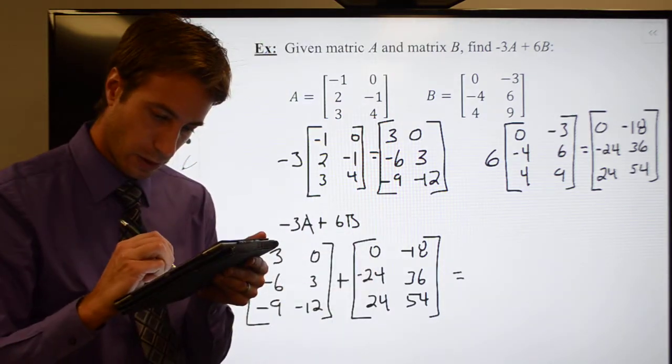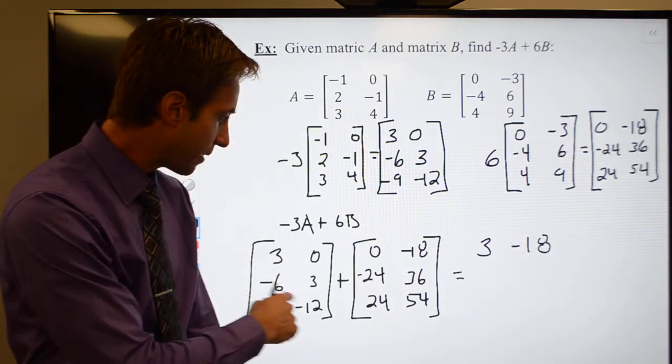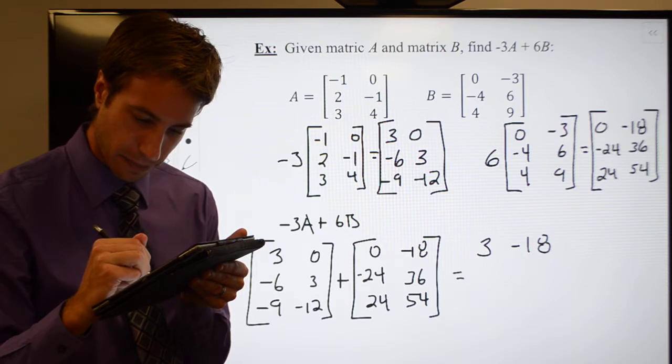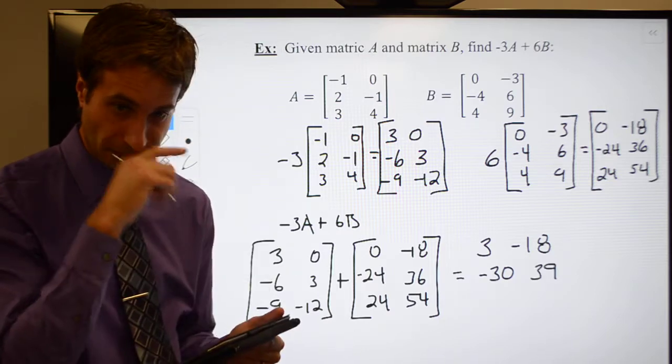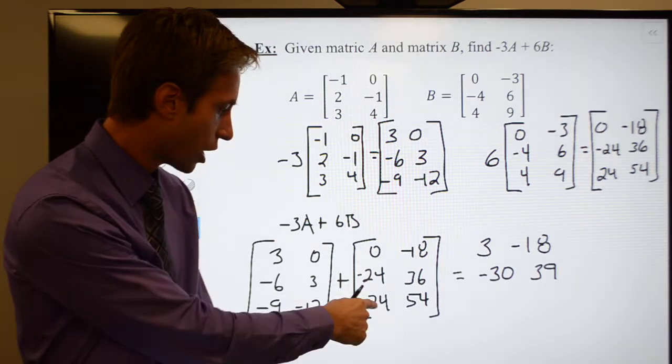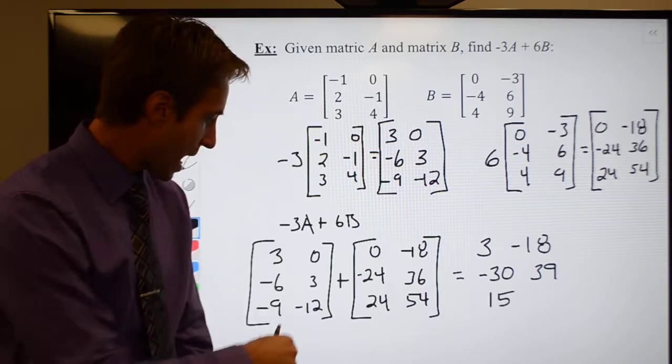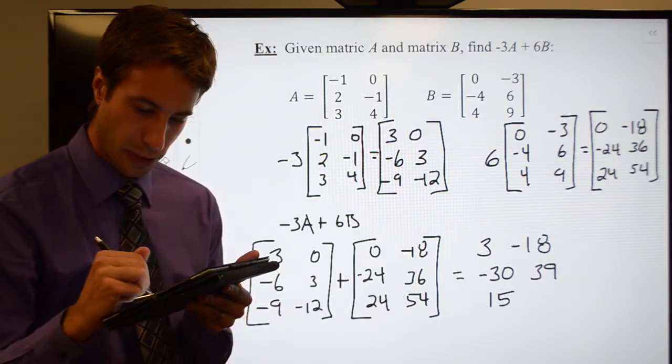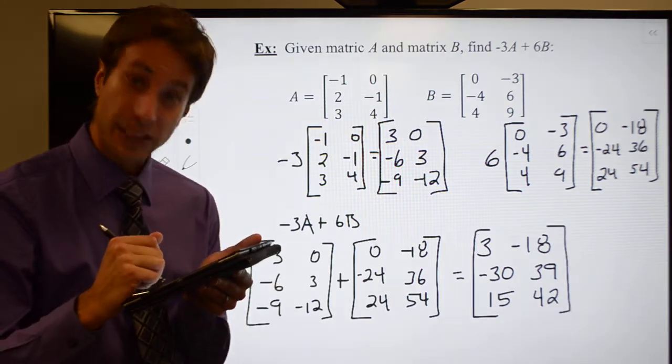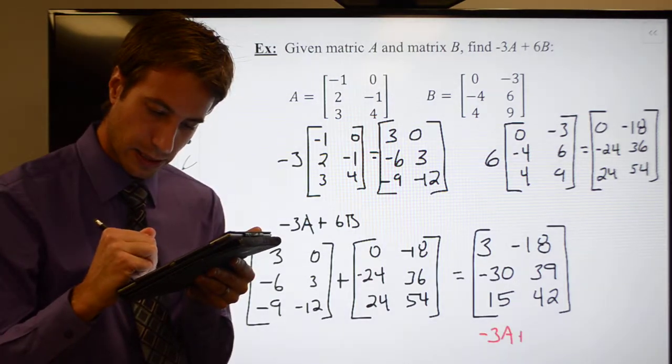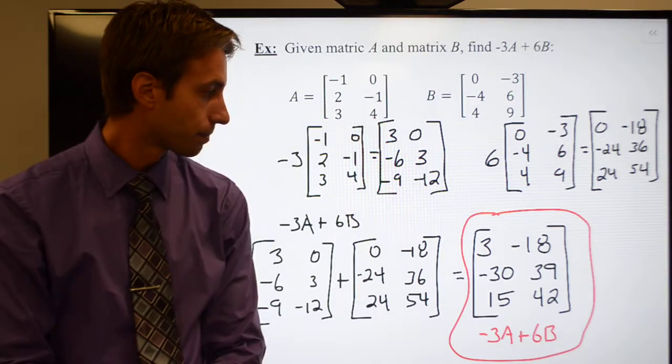3 plus 0 is 3. 0 plus -18 is -18. -6 plus -24 should be -30. 3 plus 36 is 39. Let's keep going. -9 plus 24 should leave me with positive 15. And -12 plus 54 should leave me with positive 42. So what I have found is the matrix that is -3A + 6B. This is my new matrix.